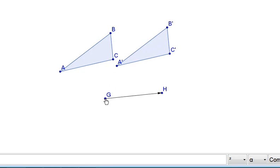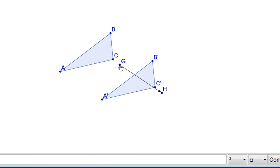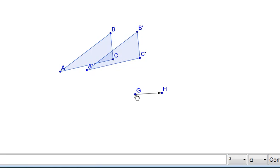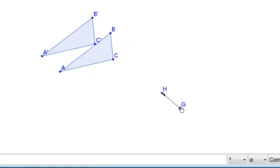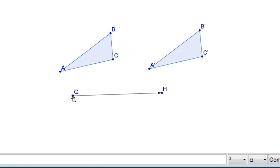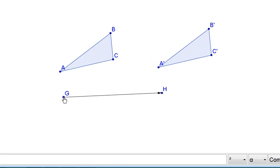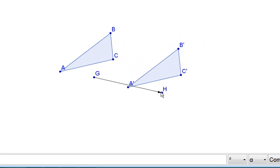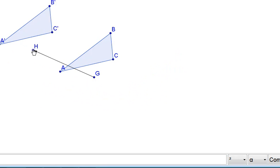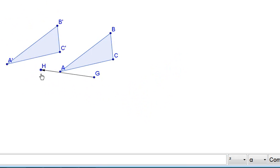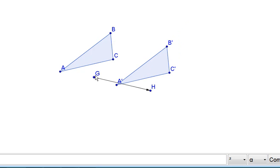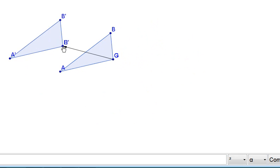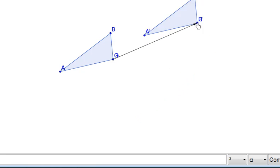So notice, as I move, the length of my vector determines how far my triangle is away from its image. And the direction of the vector tells me the direction that my image is in. So it's easier to set the vector to start on a point, and then we notice that it always stays with that point of the image.